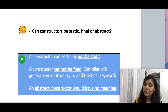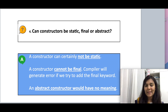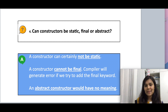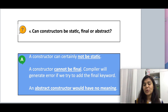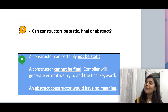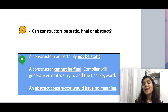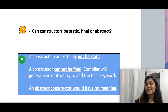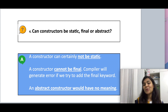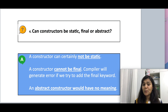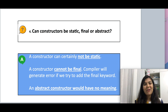A constructor cannot be final either — if we try to add the final keyword, the compiler will give an error. The final keyword prevents a method from being overridden. But when a class is inherited by a subclass, everything gets inherited apart from a constructor. So if a constructor is not inherited, it cannot be overridden, making the final keyword superfluous. An abstract constructor would also have no meaning because abstract implies the implementation will be provided in the subclass, but constructors must have the same name as the class. So we cannot have an abstract constructor in a superclass and then provide the implementation in the subclass — that would create chaos.